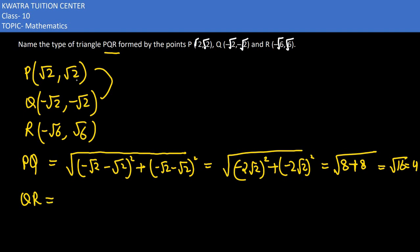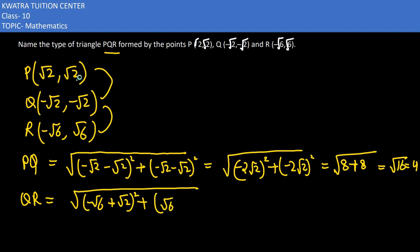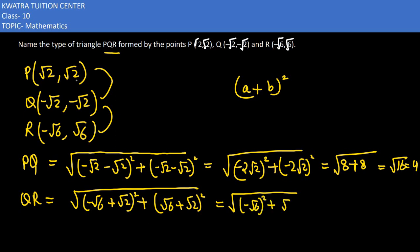Similarly, we have to find QR. We take the values: (-√6 + √2) squared, then (√6 + √2) squared. We expand using the (a + b)² formula, where a is -√6 and b is √2.